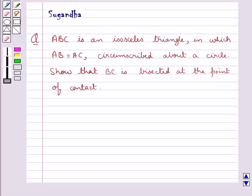Hello and welcome to the session. In this session we will discuss the following question which says ABC is an isosceles triangle in which AB is